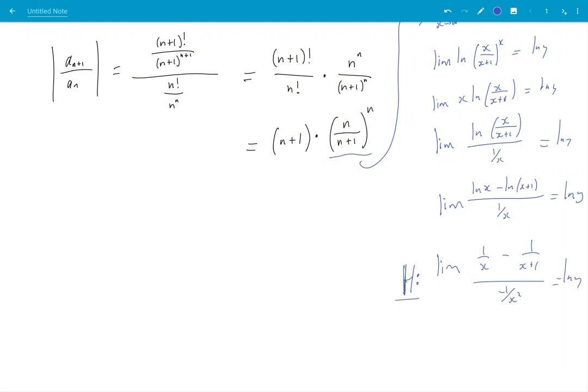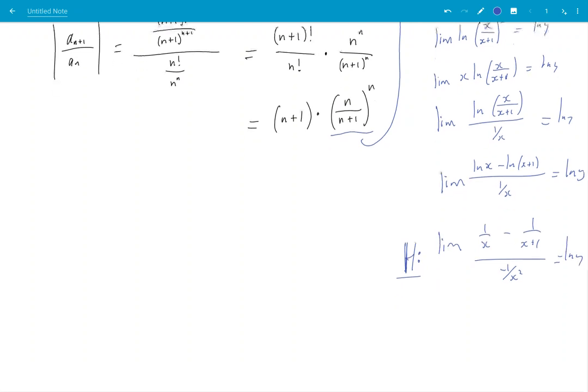It gives me 1 over x minus 1 over x plus 1 all over negative 1 over x squared plus 1. Wow, this is a lot of work for one question, isn't it? I'll show you how you can avoid this nonsense later. And what do I get? Oh, boy. Negative x plus x squared over x plus 1 is ln y.